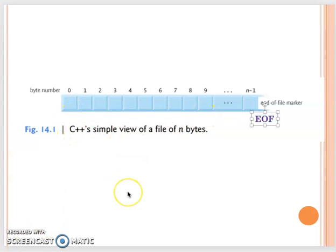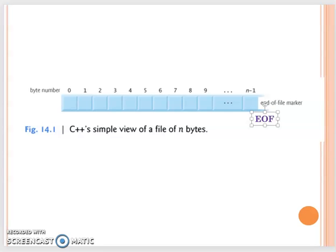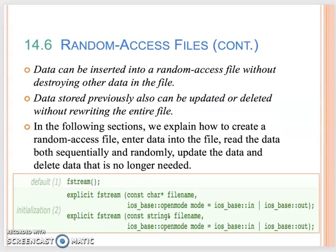In Part 1 for this week we will talk about how to process sequential text files. Then moving to Part 2, we will talk about random access files.